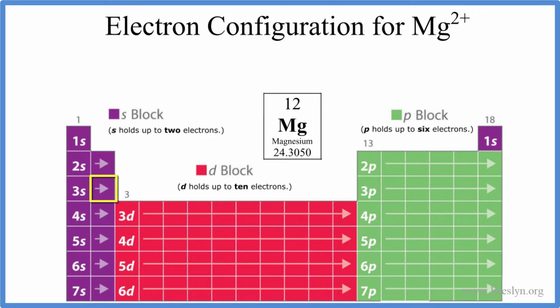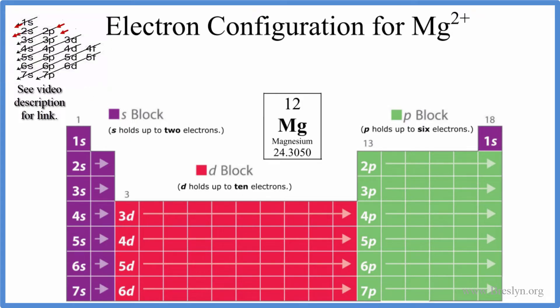So let's write the configuration. We'll use this periodic table here broken up into blocks. You can also use this chart if you like. There's a link in the description describing how to do that. But I really think this is a better way to do it. It helps you understand how the periodic table is organized.